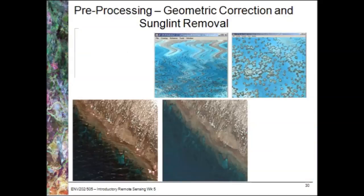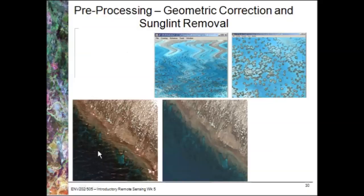Here are a couple of examples using imagery from Heron Reef. The top example shows a form of geometric correction where we've removed the roll, pitch, and yaw to give us a geometrically correct image with coordinates, allowing measurements of distance and area. The bottom example shows the removal of sun glint from the water's surface. In the left-hand image, there's quite a bit of glint obscuring our ability to see into the water and see the coral, whereas the image on the right has that removed, and you can see the coral under the surface much more clearly.